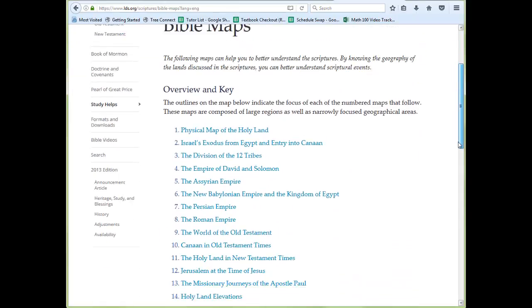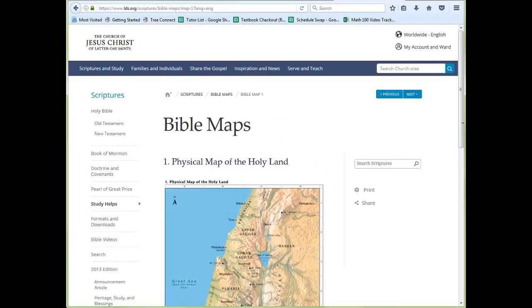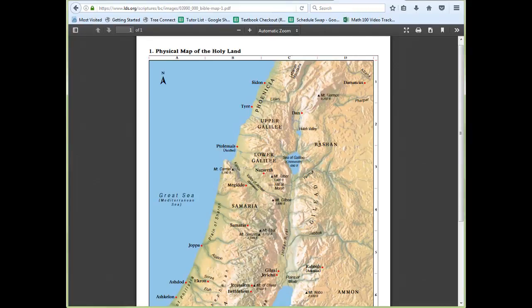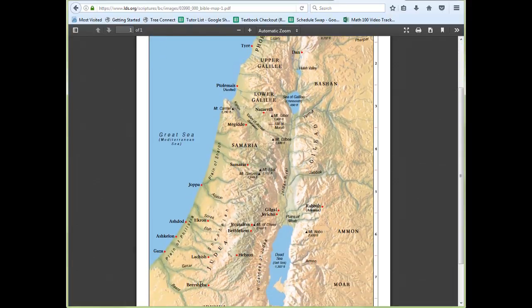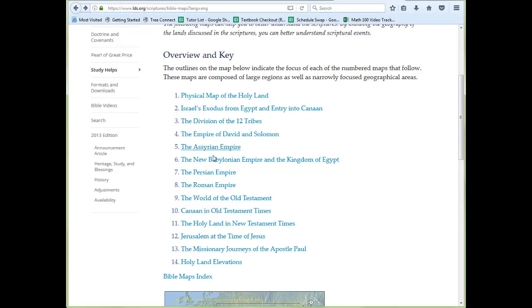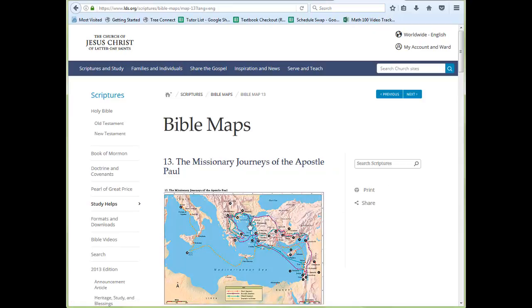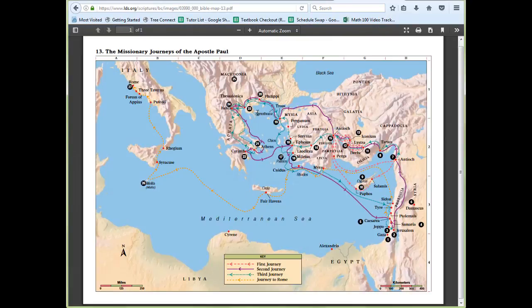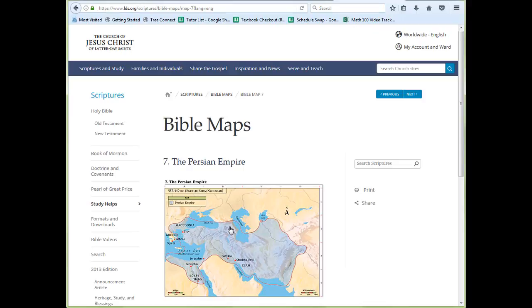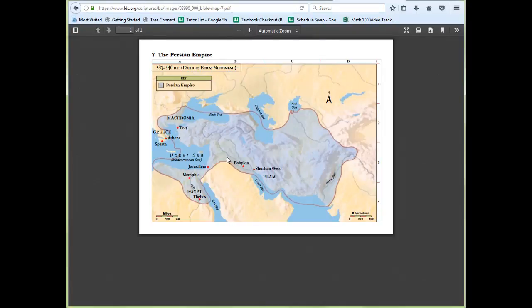We scroll down and see map number one, a physical map of the Holy Land. Let's make it larger - we can see where Samaria is, some of these names from the Bible. We could see the missionary journeys of the apostle Paul. There's Samothrace, Corinth for the Corinthians, Jerusalem, and Rome. Notice what happens along the top of each of them: they have A B C D and 1 2 3 4 breaking these maps up into groups.